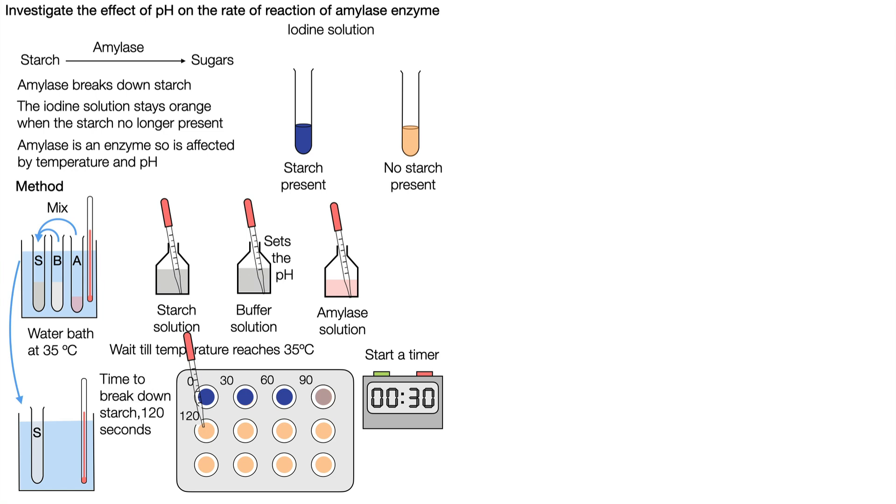So we can see that the time to break down starch is 120 seconds for our first pH. We would repeat this whole experiment with different pH buffer solutions.